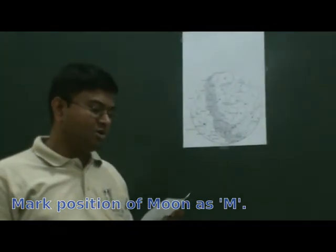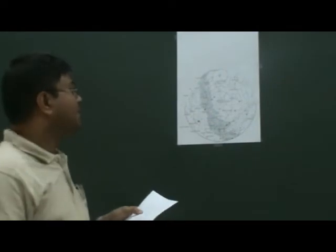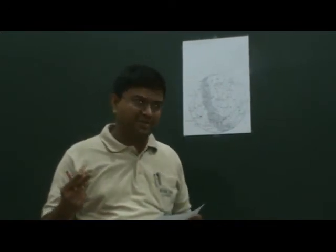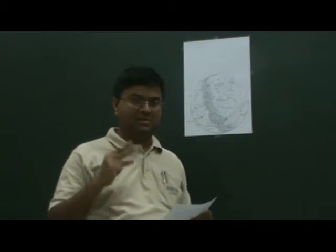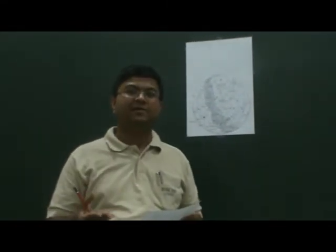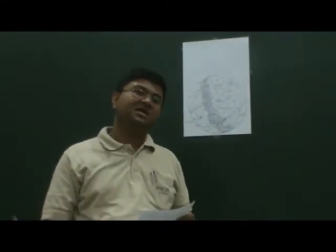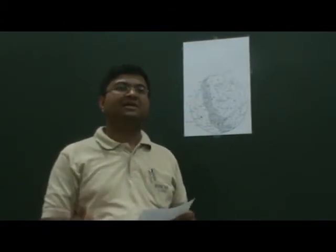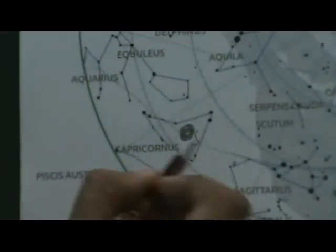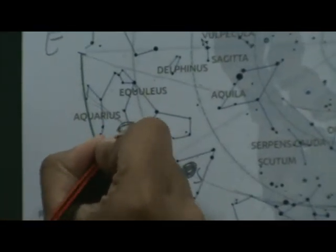If yesterday was a new moon day, mark the current position of the moon on the map as M. Yesterday being a new moon day means yesterday the sun and moon coincided. In one day, the sun's position does not change appreciably, but the moon's does. From your textbook, the moon rises about 50 minutes later every day. So if yesterday it had risen with the sun, today it will rise slightly later. Moon should be somewhere behind the sun, probably somewhere here in the adjacent constellation.